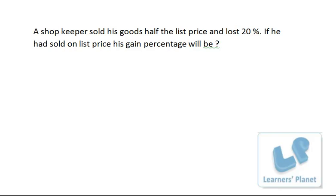Very simply you can assume the selling price to be 100. Or I can assume the cost price to be 100. So loss is 20%, that means 20 rupees, right? That means selling price is 80 rupees. And that is actually half the list price.